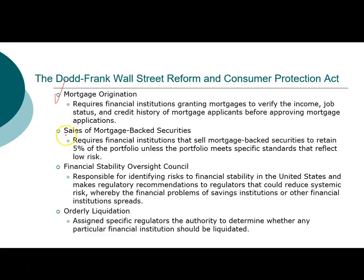For the sale of mortgage-backed securities, the act requires financial institutions to keep five percent of the portfolio — essentially asking securities firms to have some skin in the game so they aren't creating MBS that are basically junk. The Financial Stability Oversight Council was designed to address the too-big-to-fail systematic risk problem. They look at financial stability in the economy, identify which firms could become too big to fail, conduct stress testing, and have regulations specifying what steps must be taken and who is responsible during a financial crisis or liquidity problem, so that we don't get into a panic situation.